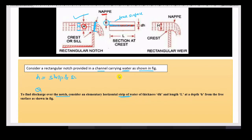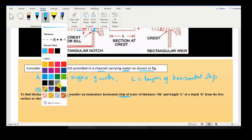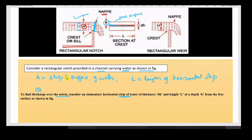Consider a small strip at a distance of h from the free surface of water. L is the length of the horizontal strip. dh is the thickness of that strip. The depth below the free surface is h. These are the notations required for solving this derivation: H is the head of water or height of water above the notch, L is the length of the strip, dh is the thickness.